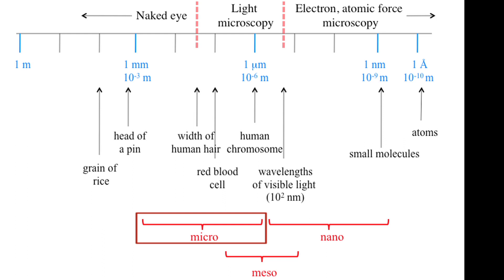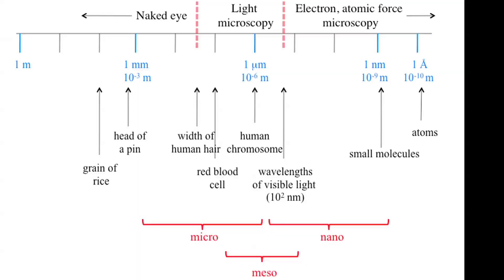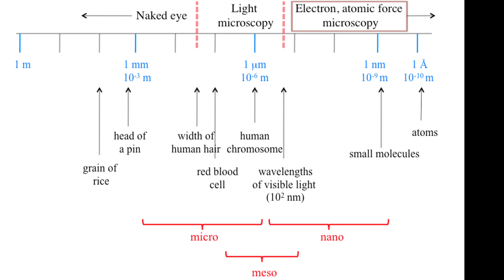Things that are one to a thousand nanometers in size — if you get bigger than that, we get into the microscale, things that are one to a thousand microns in size. Sometimes you'll hear the term mesoscale used to bridge those two length scales. A very useful benchmark is the width of a fine human hair, which is right about the limit of what we can see with the naked eye — on the order of tens of microns. Smaller than that, we need assistance: light microscopy, and for even smaller, electron microscopy or atomic force microscopy. We can image things all the way down to individual molecules and atoms.